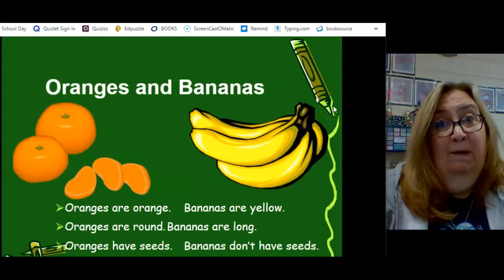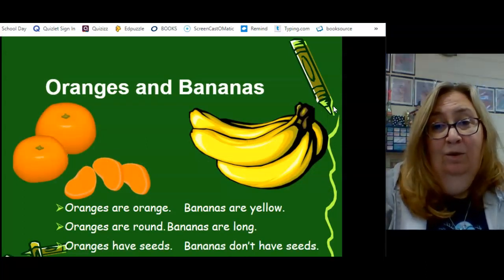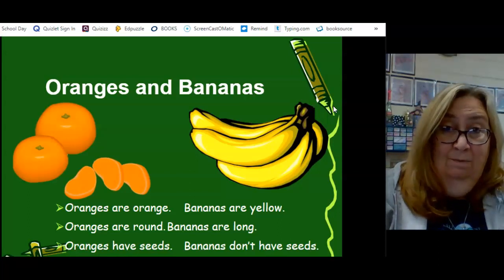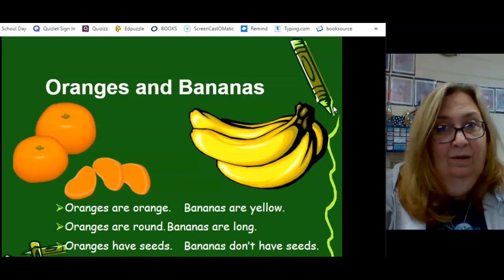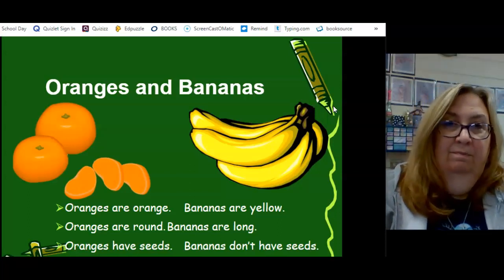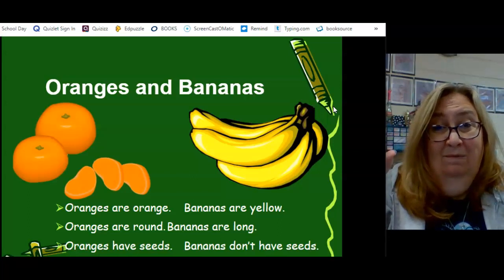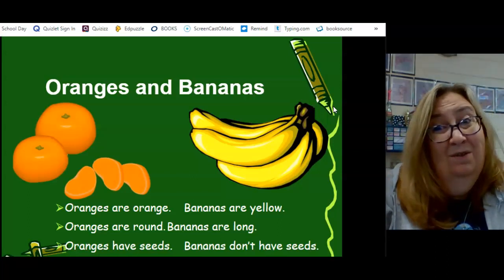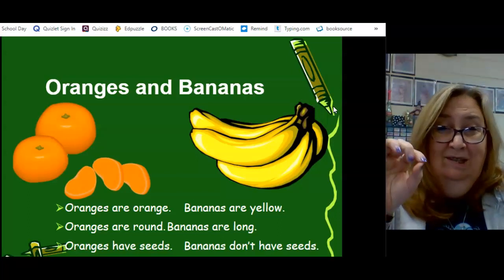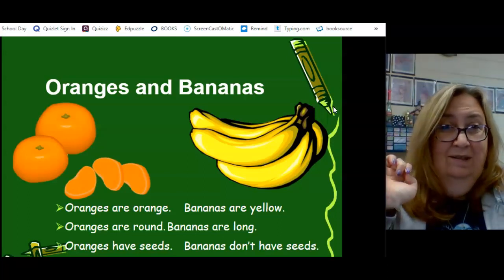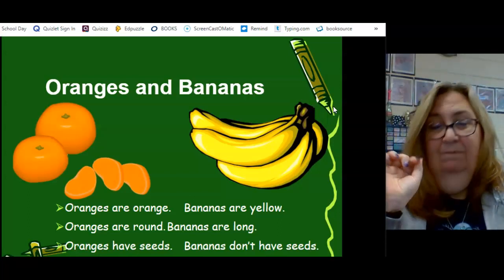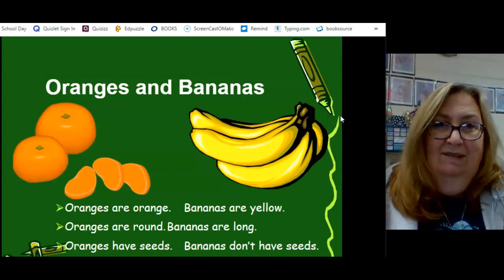So, this might be the easier of the two tasks today. We told how oranges and bananas were the same. Now, how are they different? Well, oranges are orange and bananas are typically yellow. Oranges are round and bananas are long. Oranges have seeds that we don't eat. Bananas don't have seeds or they do have those tiny little seeds that we eat. I mean, they're teeny tiny. Don't even really think of them as seeds.